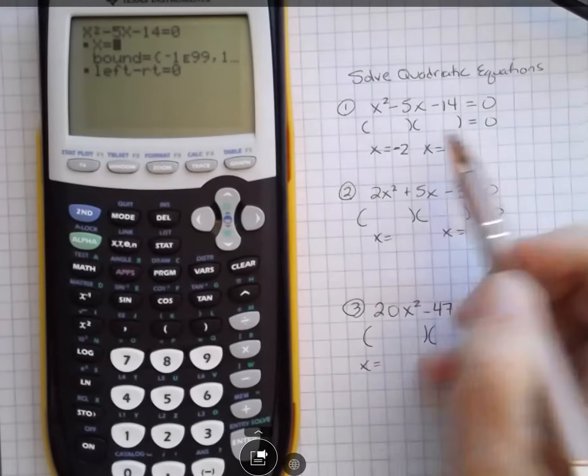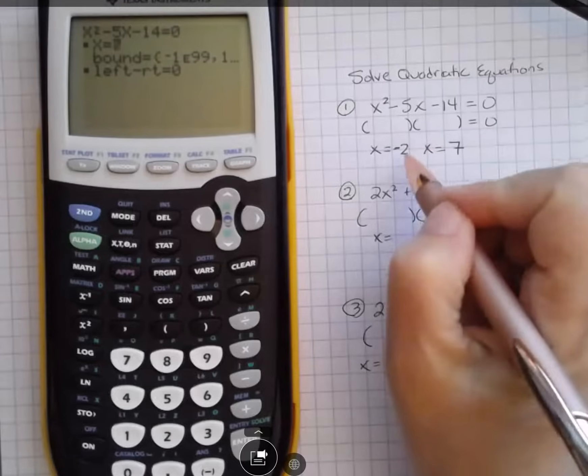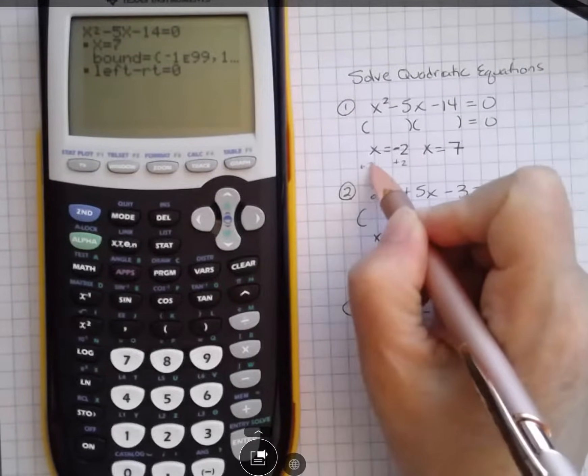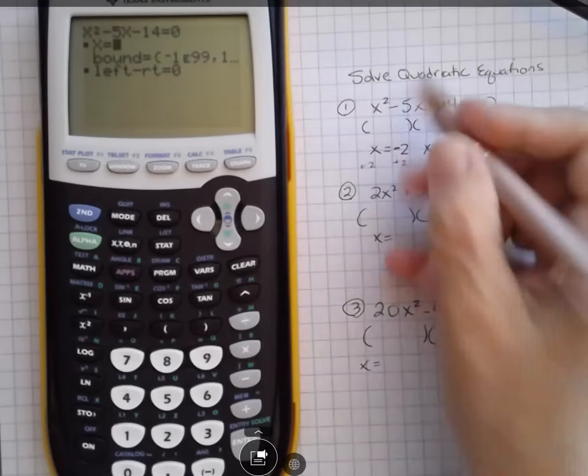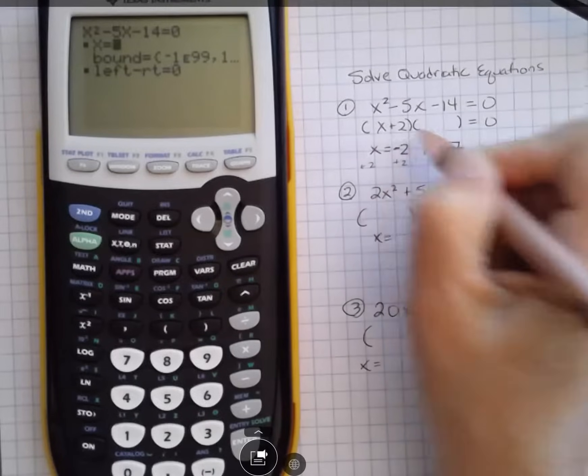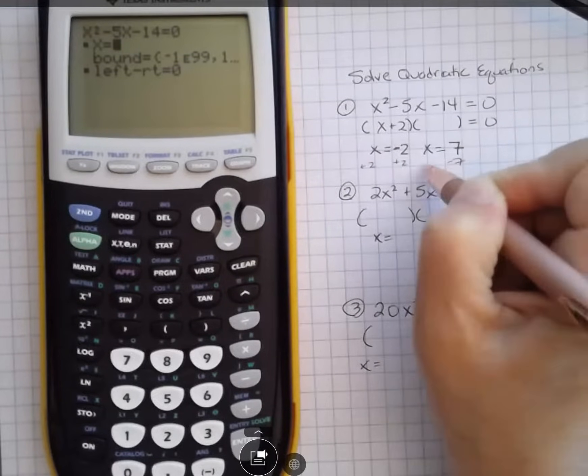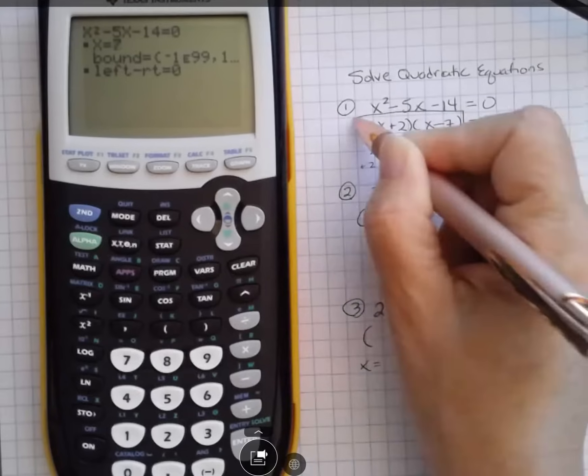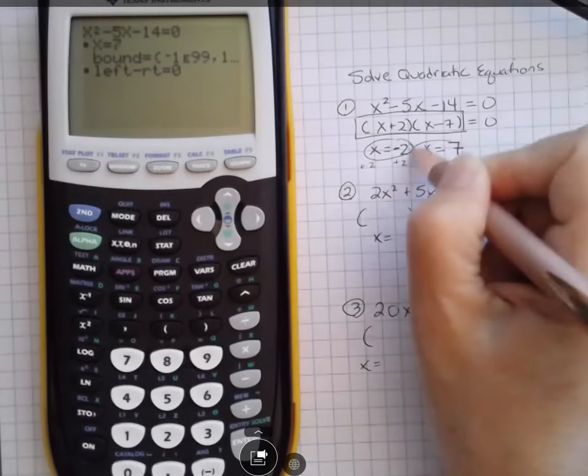So the answer was 7 here. Now what does that look like in the factored form? To get it back to this factored form, you would move that 2 back to the other side, which changes the sign of it, so that would be x plus 2, and change the sign of this one would become x minus 7. This is the factored form, and these are the solutions right here.